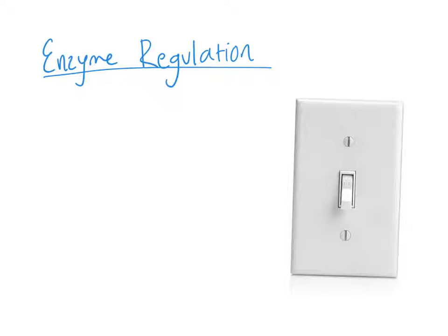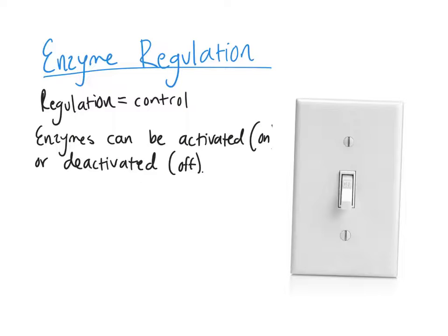Hey guys, this video is all about enzyme regulation. I'm going to start by defining what exactly regulation means when we talk about cells. Essentially, regulation is the same as control — enzymes can be activated or inactivated. We're kind of turning our enzymes on and off to hopefully save the cell some energy. Turning enzymes off when you don't need them is the same as turning your lights off in your house when you're not home — it's going to save energy.